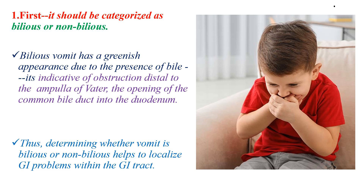First, vomiting should be categorized as bilious or non-bilious. Bilious vomit has a greenish appearance due to the presence of bile. This is indicative of obstruction distal to the ampulla of Vater, which is the opening of the common bile duct into the duodenum. Thus, determining whether vomit is bilious or non-bilious helps to localize problems within the GI tract.